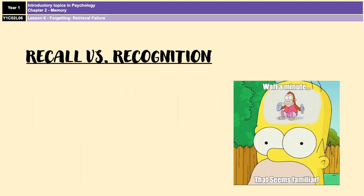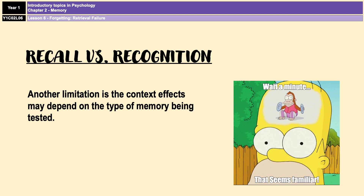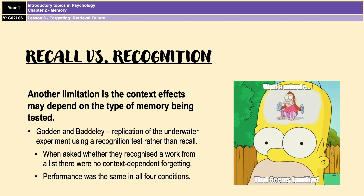Another limitation is that research suggests context effects may depend on the type of memory being tested. Godden and Baddeley repeated their underwater experiment in 1980, but this time asked participants whether they recognised a word that had been read to them, rather than asking them to retrieve it themselves. Under those circumstances, there was no context-dependent effect at all — performance was the same across all four conditions. Therefore, retrieval failure may be a limited explanation because it may only apply when a person has to recall information rather than recognise it.